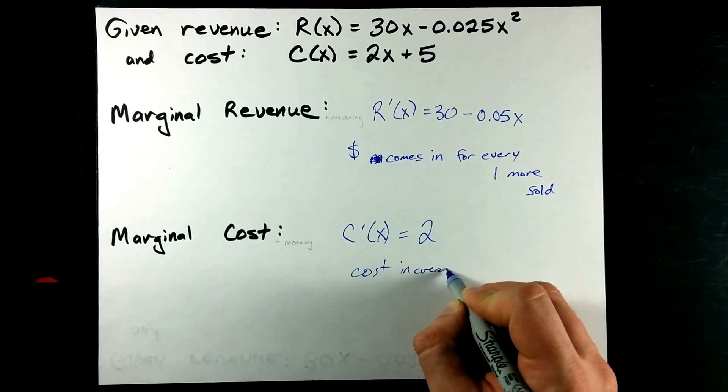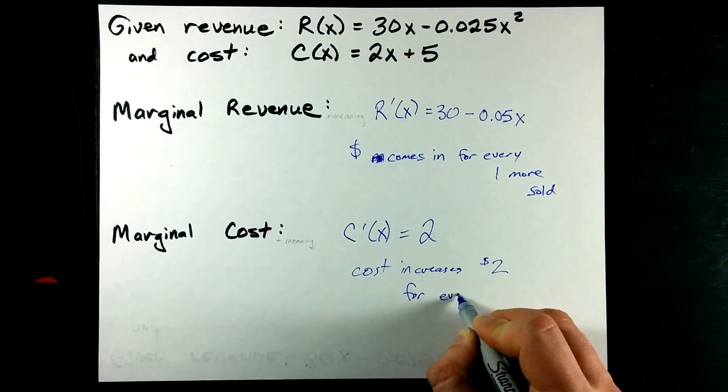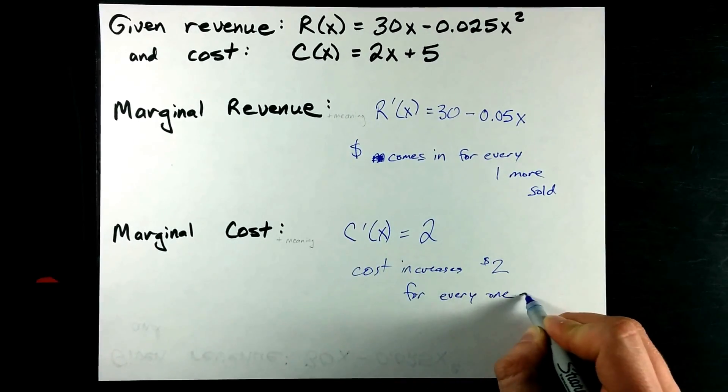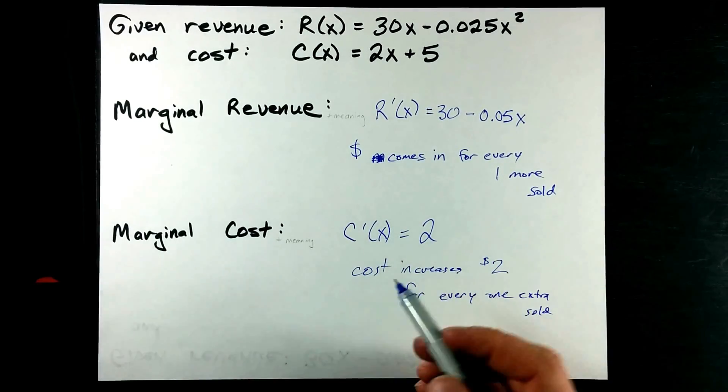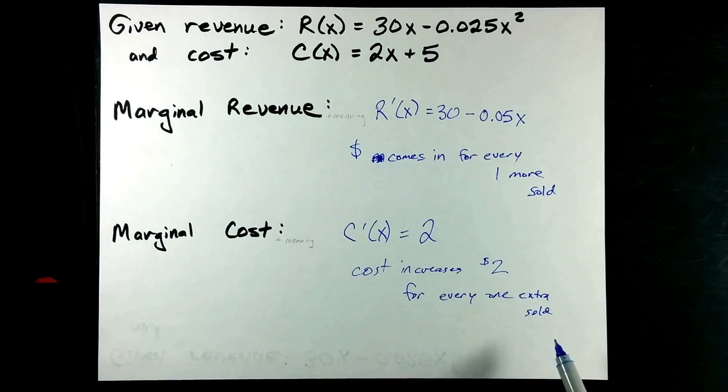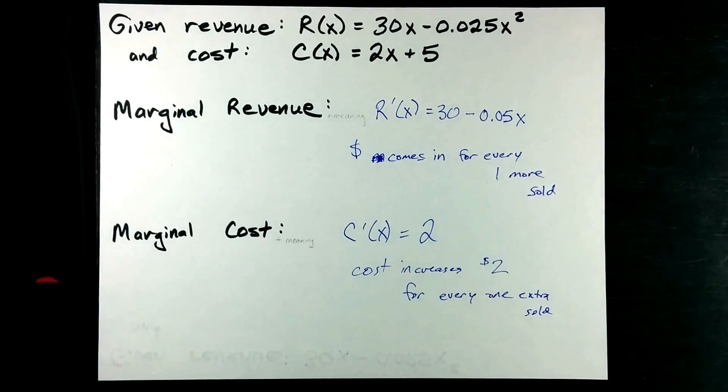Cost increases by $2 for every 1 extra sold. If this had an x in it, I would have to plug in the number that I'm selling to figure out how much that extra 1 is costing me.